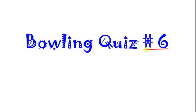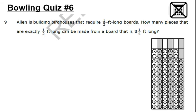All right, this is bowling quiz number six, and this is a non-calculator active quiz, so no calculators. First question: Alan is building a birdhouse that requires one-half-foot-long boards. How many pieces that are exactly half a foot long can be made from a board that is eight and one-fourth foot long?